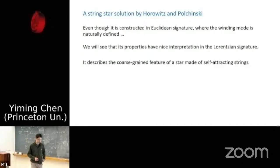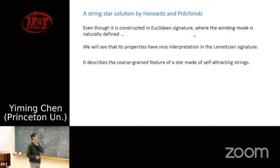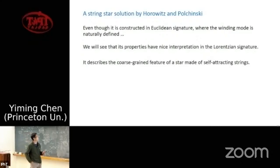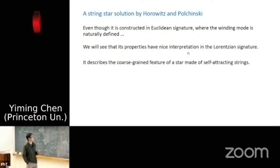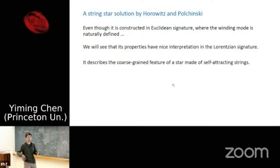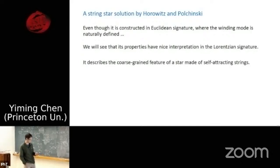Although the solution is first constructed in Euclidean signature — where the winding mode is well-defined on a circle — many of its properties have a nice interpretation in Lorentzian signature. I will argue that it really describes the coarse-grained feature of a gravitating star made of self-attracting strings.